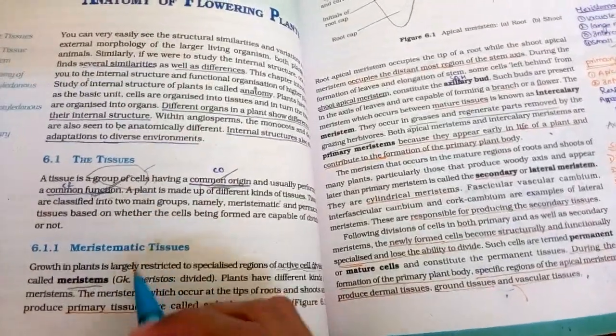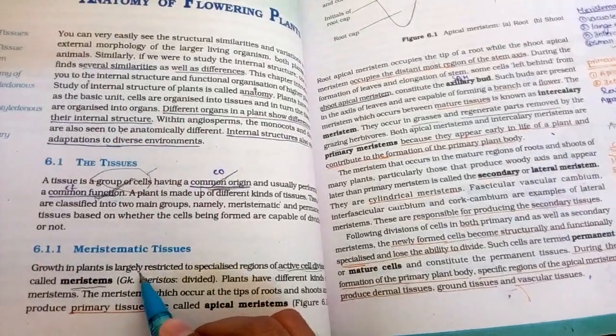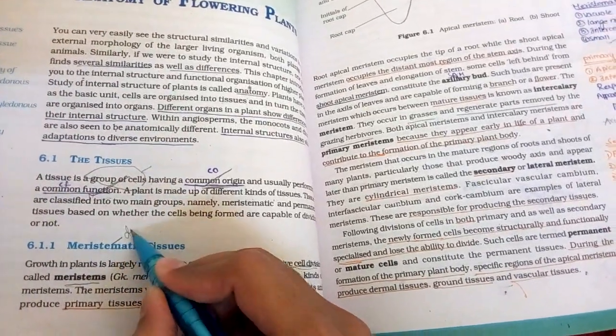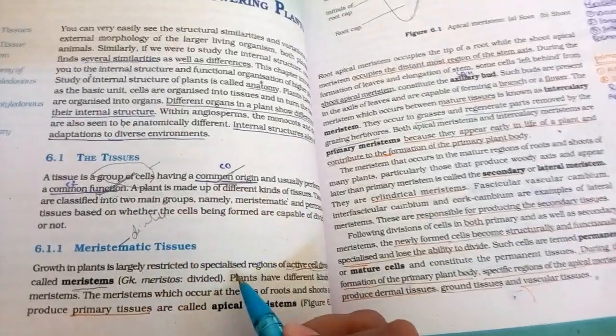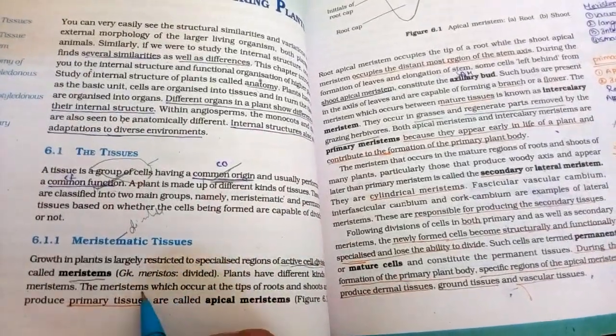The next tissues are of different types. Meristematic tissues. Meristematic tissue means divisible. So, where there is active cell division, we call it meristematic tissue.